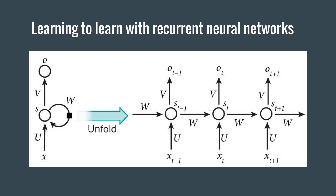The authors write the final optimizee parameters as a function of the optimizer parameters, taking the update steps to be the output of a recurrent neural network, while the objective function depends only on the last parameter value. For training the optimizer, it is convenient to have an objective that depends on the entire trajectory of optimization.